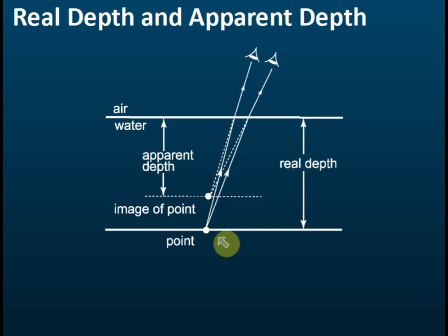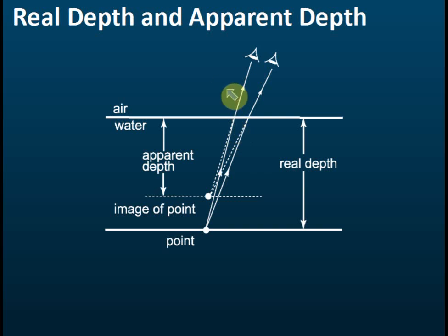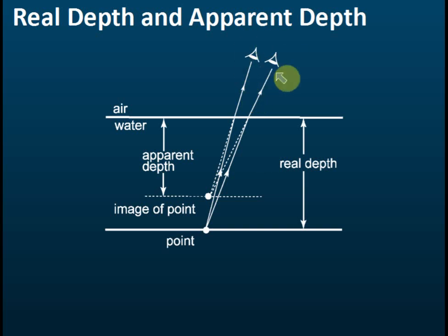The reason is: let's take this point. The light from this point moves to the water surface, and it moves from a denser to a less dense medium. Therefore, it is refracted away from the normal. The light moves away from the normal. But the observer always assumes that the light ray moves in a straight line.